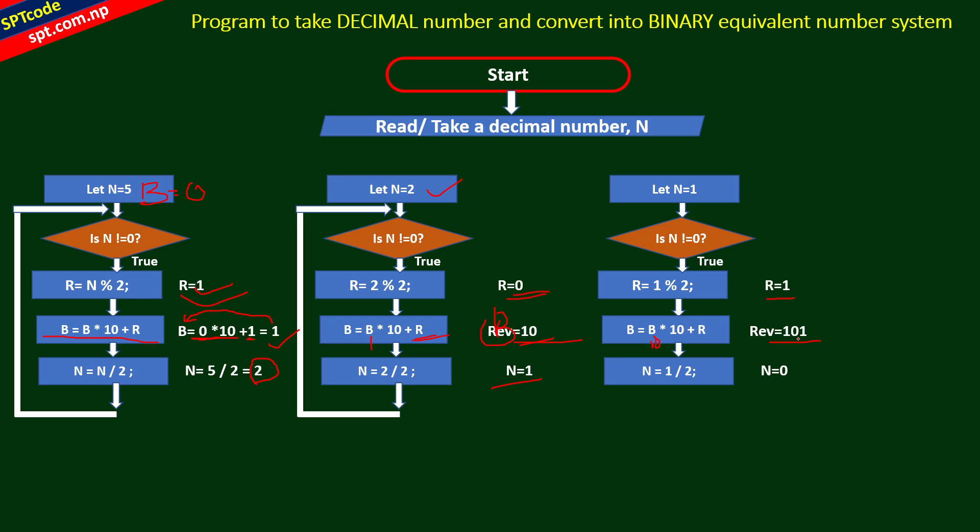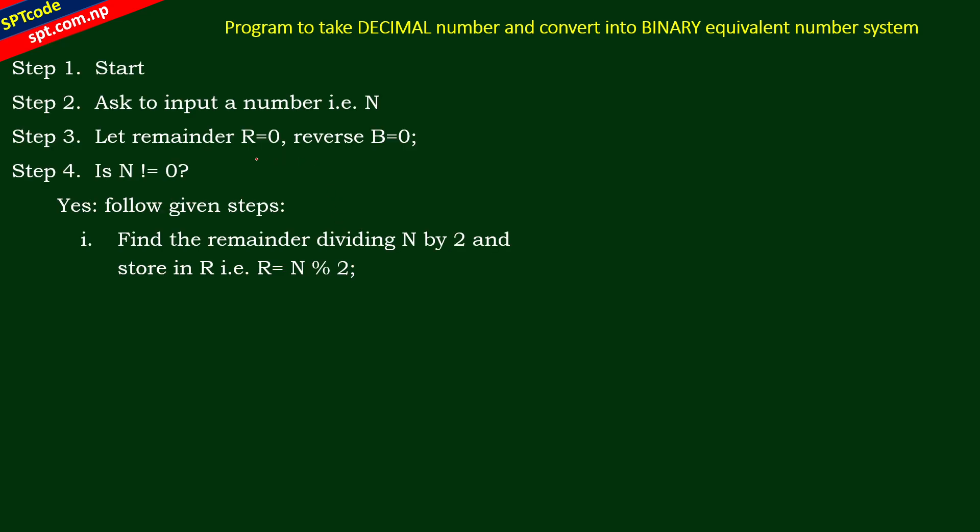Next we calculate: 10 times 10 is 100 plus remainder 1 equals 101. So this is the conversion. And last we print the result. Now let's see the algorithm.